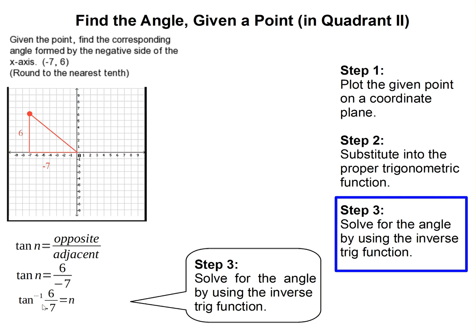So then what you do is you're probably going to enter 6 or negative 7 first, and then the inverse tangent. Some calculators, you have to do the inverse tangent function and then type this. And then this will give you approximately 40.6 degrees.